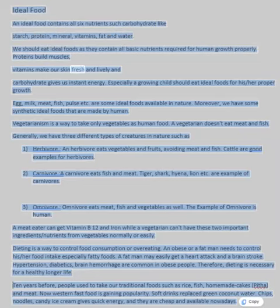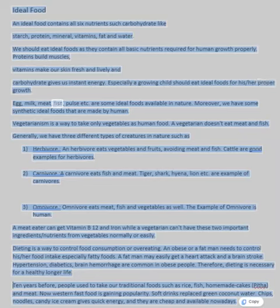Carbohydrates give us instant energy. Especially a growing child should eat ideal foods for proper growth. Egg, milk, meat, fish, pulse, etc. are some ideal foods available in nature. Moreover, we have some synthetic ideal foods that are made by humans.